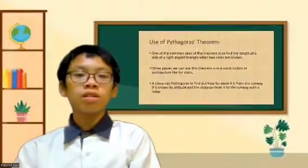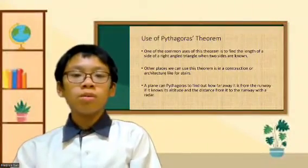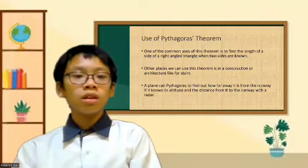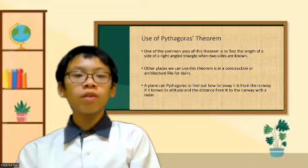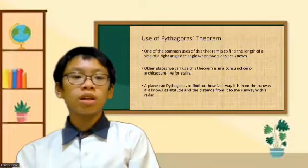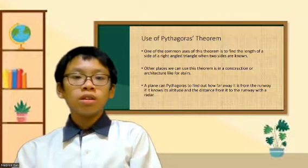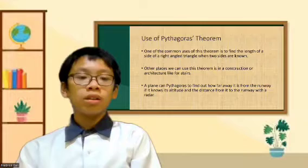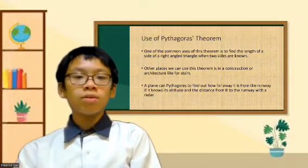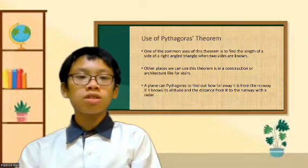There are several uses of Pythagoras' theorem. The most common use is to find the length of a side of a triangle when two sides are known. The second one is it can be used in construction or architecture.